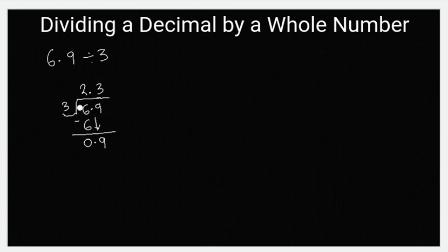So three times three is nine. Actually it's not just three, it's zero point three. Point three times three is zero point nine. And then you subtract.